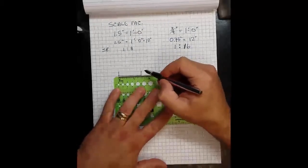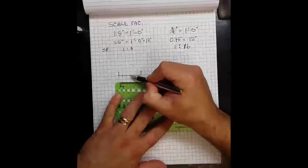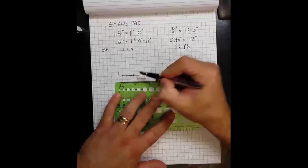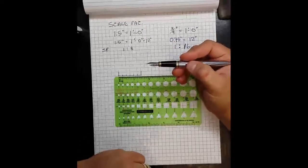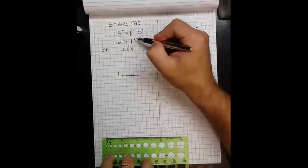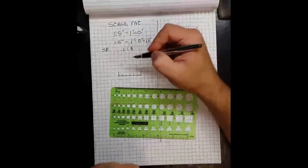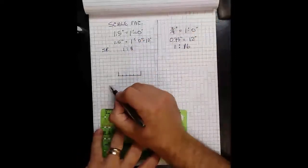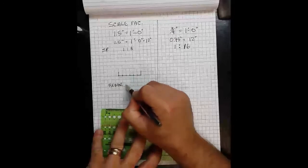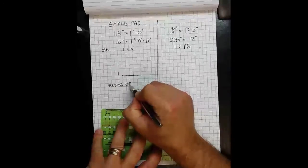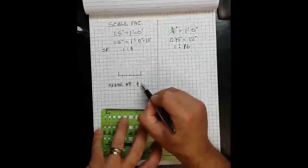And as I do that, I can quickly see I've got one, two, three, four, five, six marks. That means each of these squares is two inches. And let's say at inch and a half scale, I would want to draw in a number eight rebar. A number eight rebar has a diameter of one inch.